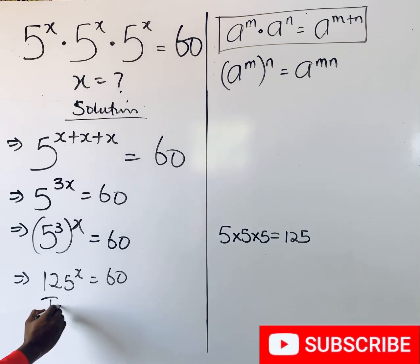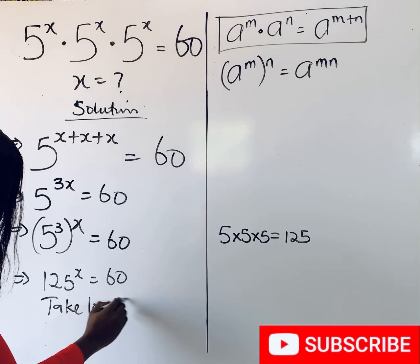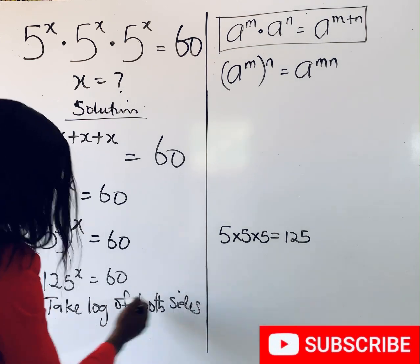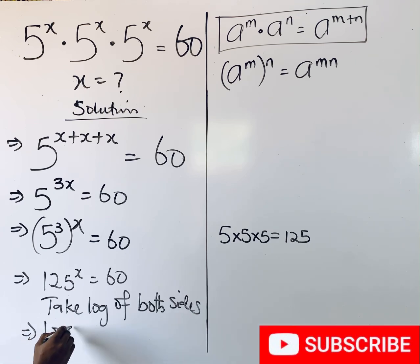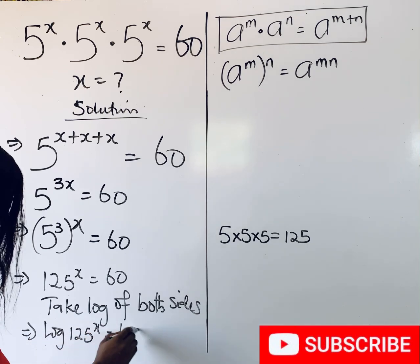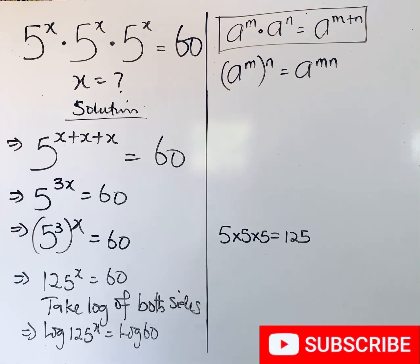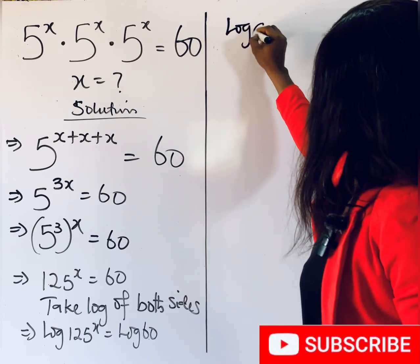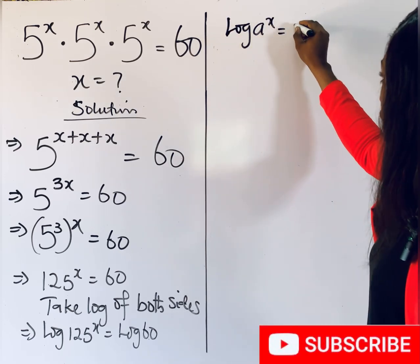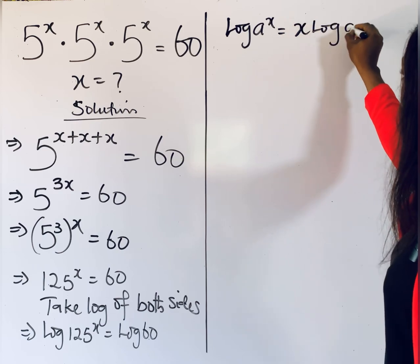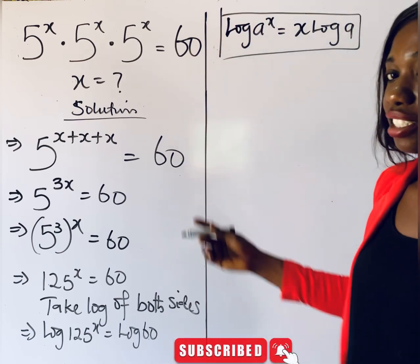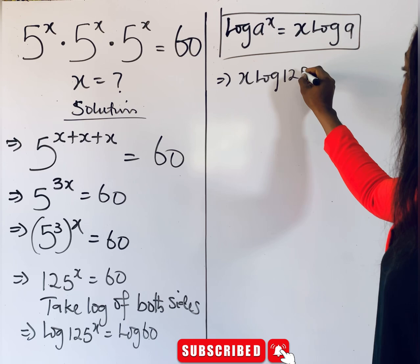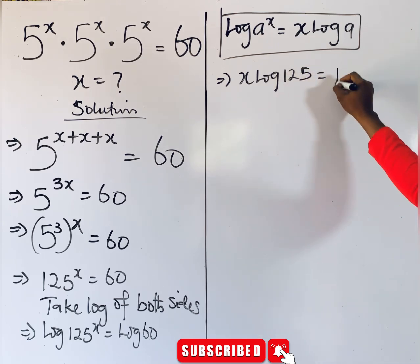At this point, take the log of both sides to get the value of x. This gives us log(125^x) = log(60). Simplifying further, remember this rule: for every log(a^x), the power multiplies to give x·log(a). Applying it here, we have x·log(125) = log(60).